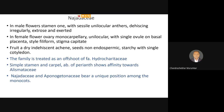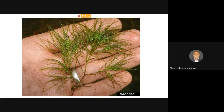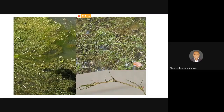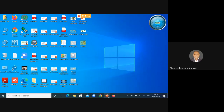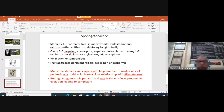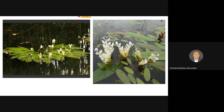With this we have completed the two genera today — one genus was Aponogeton and the other is Najas. Here I am showing the images again of Najas genus which is an aquatic plant, and this is the Aponogeton. These two genera have been separated from Hydrocharitaceae.